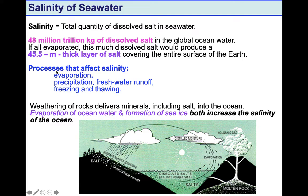The three major processes affecting salinity are: evaporation of seawater, particularly due to high solar energy rates; precipitation such as rainfall, particularly in rainforests and tropical subtropical regions in the oceans; and freshwater runoff via rivers, also very important.